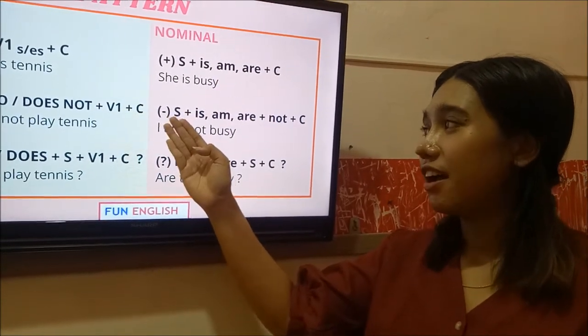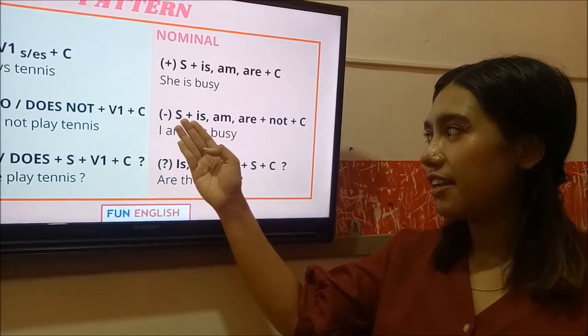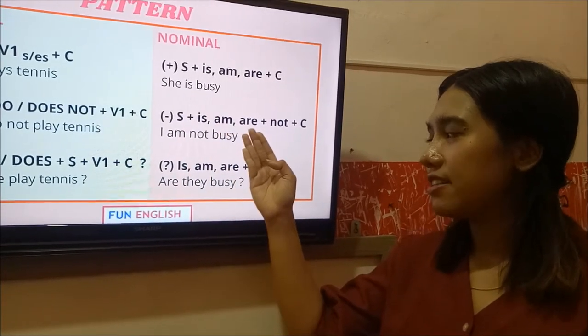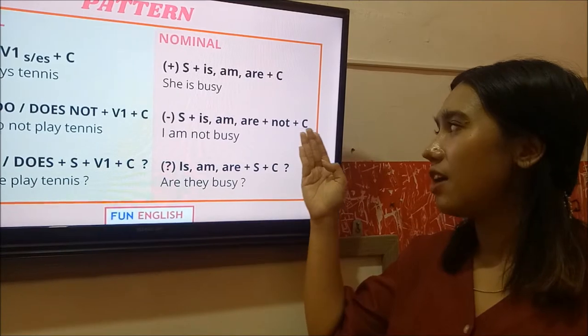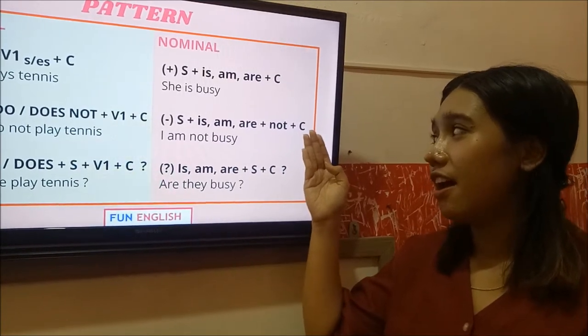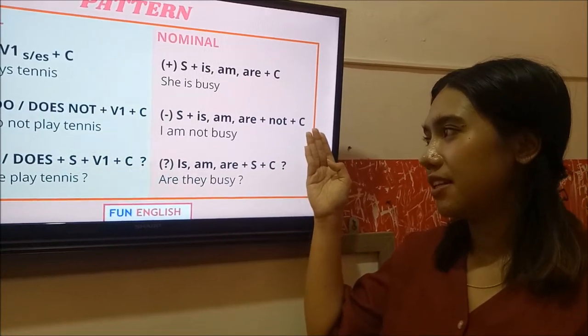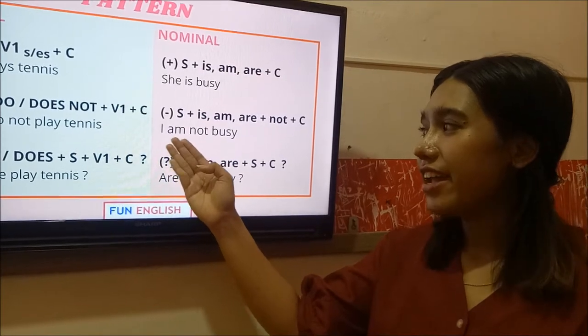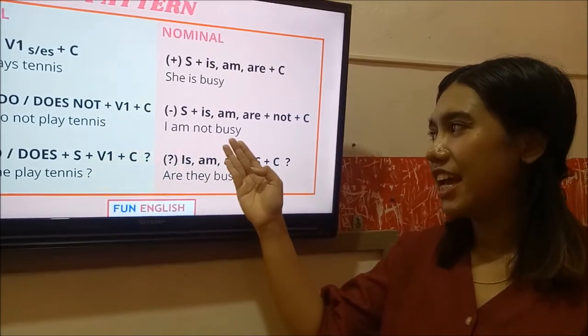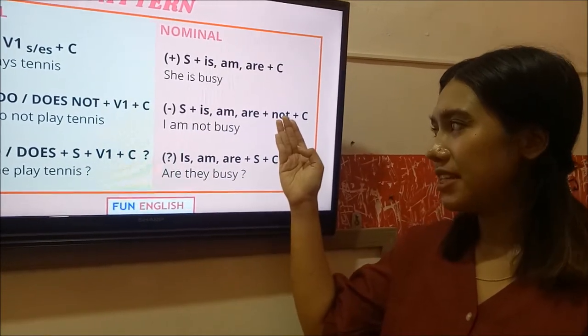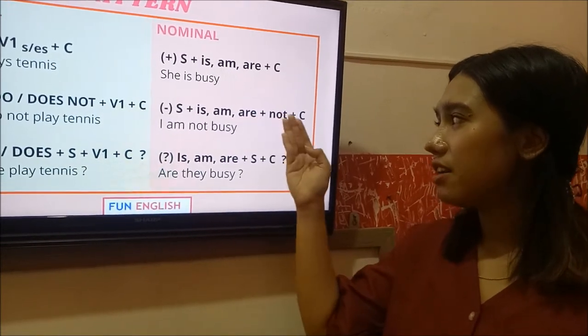And the negative. You have to include subject is and are as a to be and plus not and adjective as a complement. I am not busy. She is not busy. They are not busy.